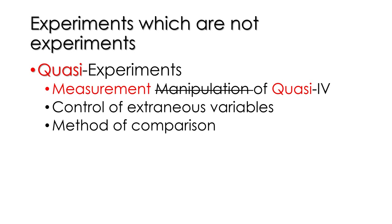A quasi-IV is not a manipulated independent variable — it's kind of like an independent variable, but we're measuring it. We may still have control of extraneous variables and a method of comparison, but those topics are left for other lectures. What's really important here is the idea of the measured independent variable, or the quasi-experimental variable — the quasi-independent variable.